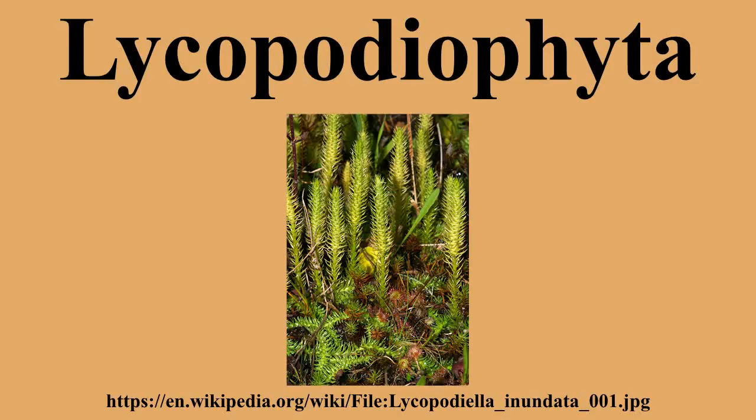During the Carboniferous period, tree-like Lycopodeophyta formed huge forests that dominated the landscape. The complex ecology of these tropical rainforests collapsed during the mid-Pennsylvanian due to a change in climate. Unlike modern trees, leaves grew out of the entire surface of the trunk and branches, but would fall off as the plant grew, leaving only a small cluster of leaves at the top. The remains formed many fossil coal deposits.